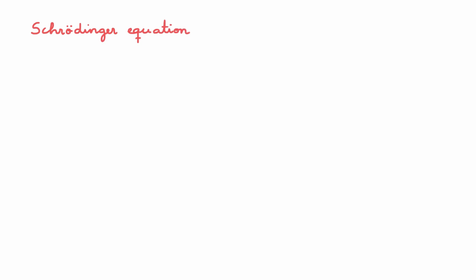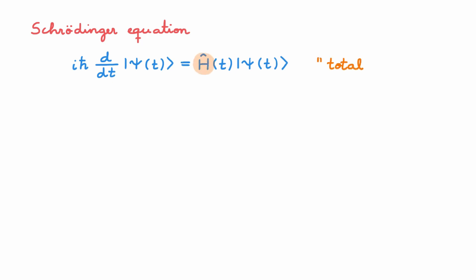Time evolution in quantum mechanics is governed by the Schrödinger equation. It is given by iħ times the derivative with respect to time of the state ψ equal to the Hamiltonian H acting on the state ψ. In this expression the Hamiltonian is the operator associated with the total energy of the system. The Schrödinger equation is a linear homogeneous first-order differential equation in time. This means that once we've specified an initial condition — say the state of the system at time t₀ — then the solution of the Schrödinger equation tells us the state of the system at any other time t. You can learn more about it in our video on the Schrödinger equation linked in the description.